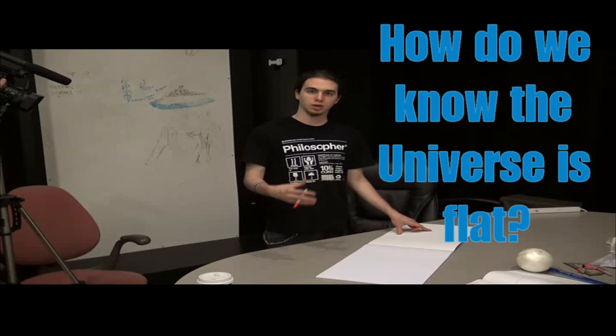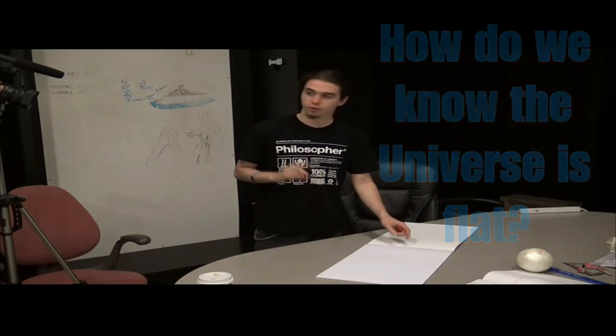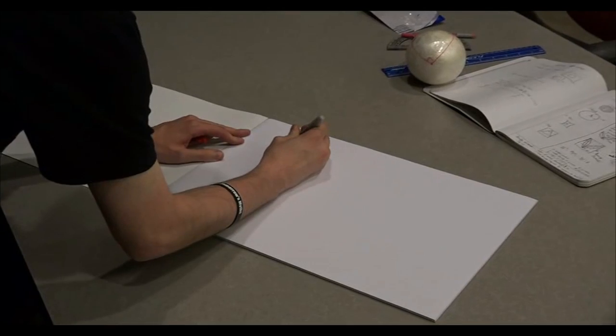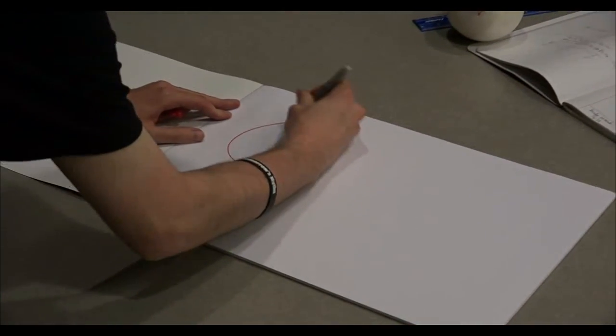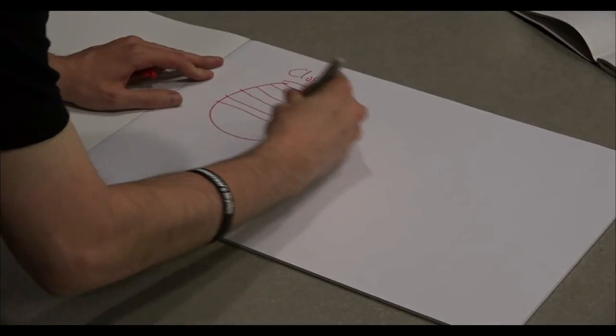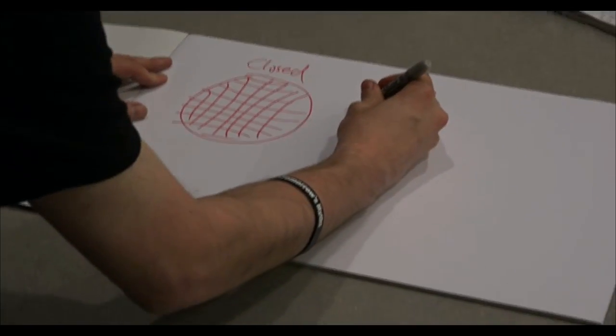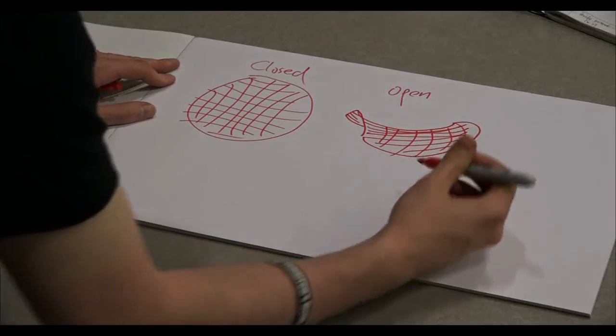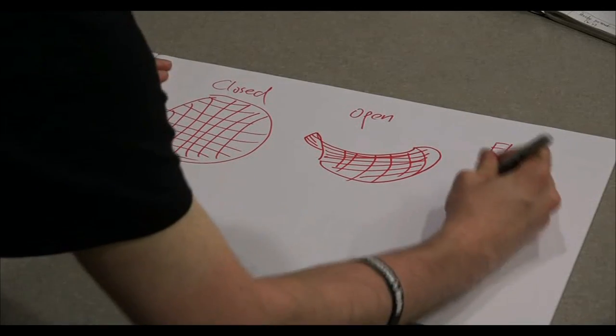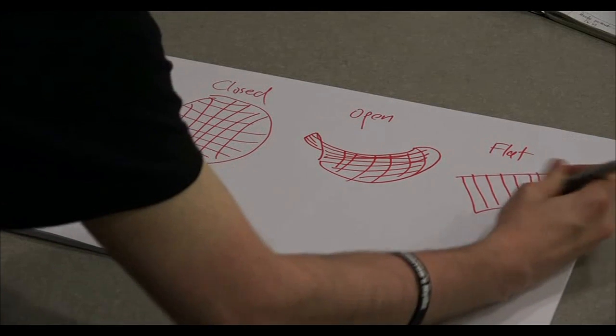When it comes to the geometric shape of the universe, there are three different possibilities. We have a closed universe which would be more of a sphere. Then we have an open universe, which is kind of shaped more like a saddle. And then the last possibility for the universe is flat, which is pretty simple, just like a sheet of paper.